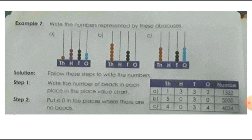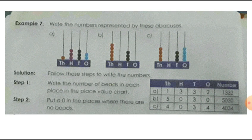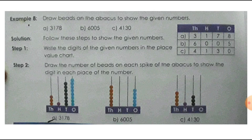Everyone discussed this type of question in the previous revision activity questions, so we can do it easily. Now the next question is also based on the abacus: draw beads on the abacus to show the given numbers. The first number is 3178 — three thousand, one hundred and seventy-eight. The second number is 6005 — six thousand and five. The third number is 4130 — four thousand, one hundred and thirty. So first, draw a four-spike abacus because these are four-digit numbers.